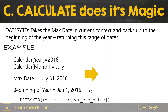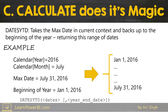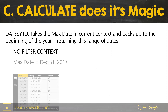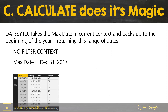But let's run with January for now — thus it returns January 1 through July 31. That's the result of DATESYTD in that example. But remember, in our actual example there was no filter context, so it picks up the max date as the biggest one available in our calendar table, which is December 31, 2017 for our data model.